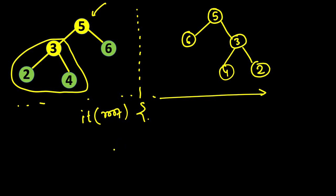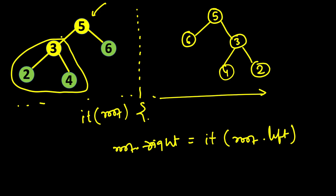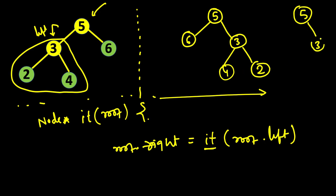So we will call invert tree on root dot left, and it will return a tree node — the new root, which is the inverted form of that subtree. We make that the right subtree of root. So root dot right equals invert tree of root dot left. It will invert it and give us back the subtree, and we make it the right child of root.